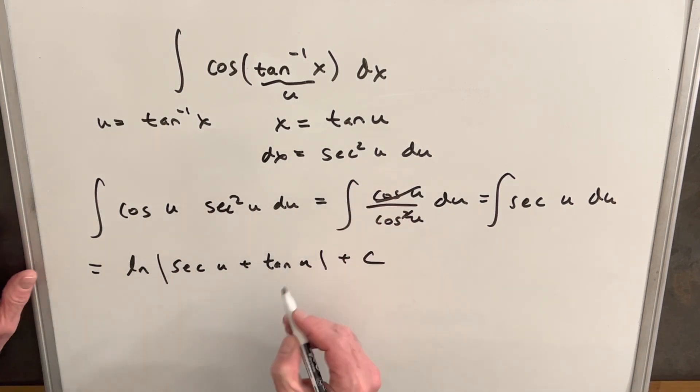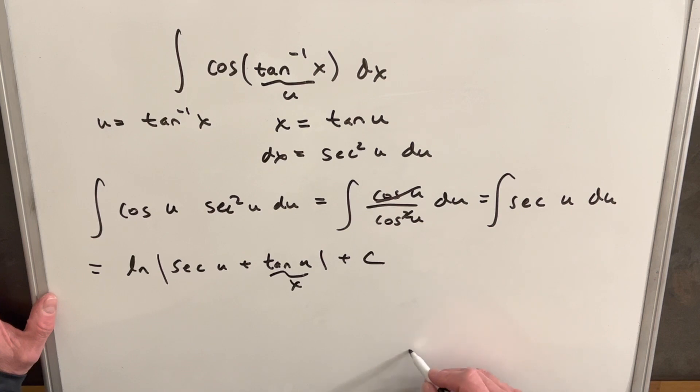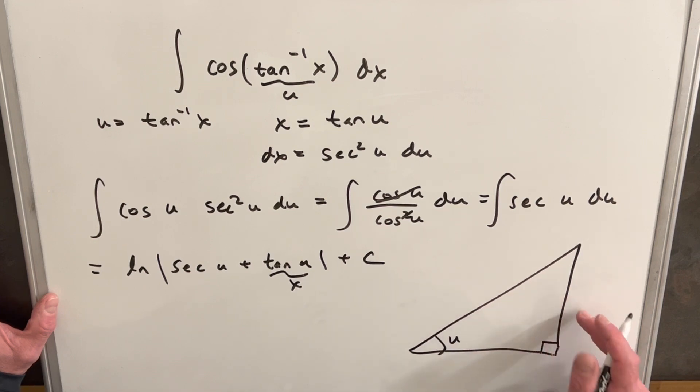Now we know what tan is. Tan is x. So we just need an expression for secant. What I'm going to do real quick is let's draw our right triangle. So if our angle is u and tan is x opposite over adjacent, we'll have x over 1.